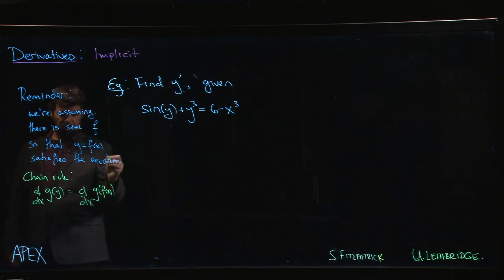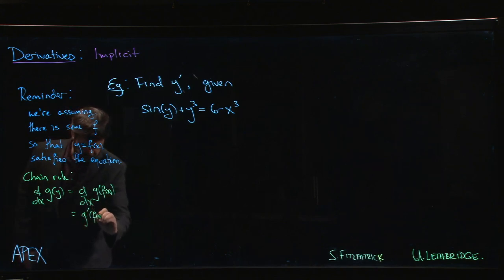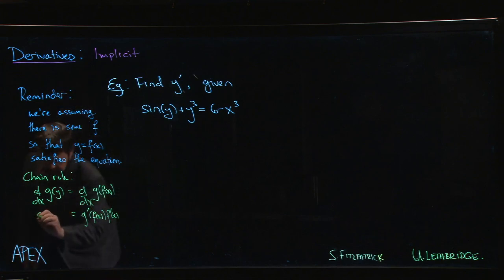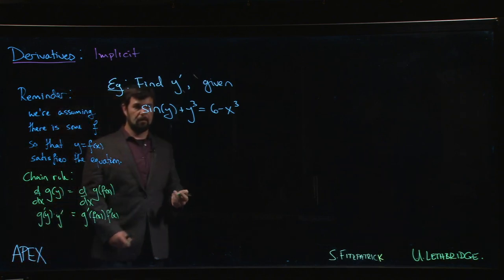But we try to save ourselves some writing, so instead of putting all this, we simply say g prime of y, we leave that as a y times y prime.